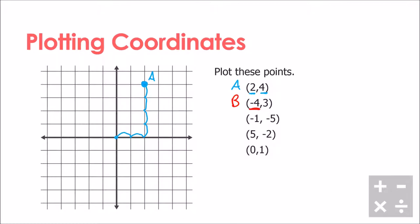For point B at negative four comma three, the negative four means I go four to the left of the origin — one, two, three, four — and the positive three means I go up three — one, two, three. That's where point B goes. For point C at negative one comma negative five, I go one to the left of the origin and then down five — one, two, three, four, five. I put a C beside it so we remember that's point C's location. For point D at five comma negative two, I go five to the right — one, two, three, four, five — and then down two in the y direction — one, two.